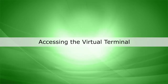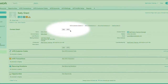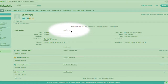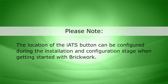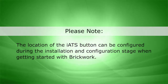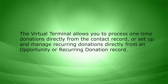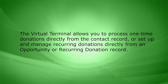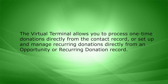Let's get started. The Brickwork Virtual Terminal can be accessed via the iATS button. This button can live on the contact, recurring donation, or opportunity record depending on your organization's processes and needs. The location of the iATS button can be configured during the installation and configuration stage when getting started with Brickwork. The Virtual Terminal allows you to process one-time donations directly from the contact record, or set up and manage recurring donations directly from an opportunity or recurring donation record.